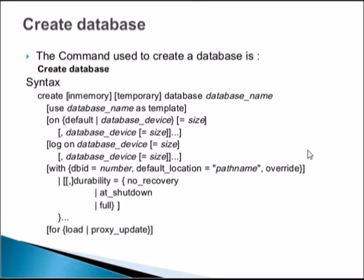The first part specifies ON device, indicating where the log and data are to be placed. You can use a template — for example, the model database — and specify it on the logical device, which we understood how to create in the previous session. You can specify a comma-separated list of logical device names with sizes, allowing multiple devices to store the database. This also means that when you want to grow the database by adding a disk, you simply add the device name — no other changes are required.